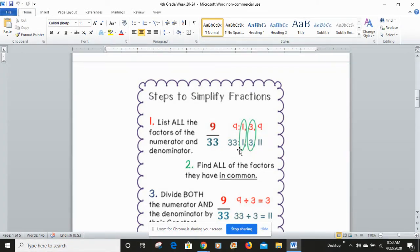For 33, I know that 1 and 33 are factors, 3 and 11. So my common factors are 1 and 3, but 3 is the greatest common factor.